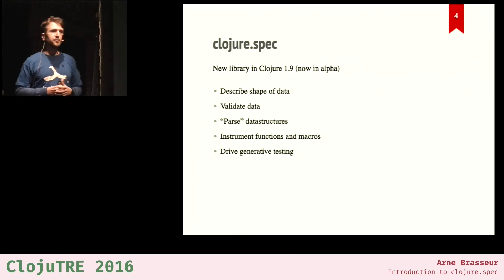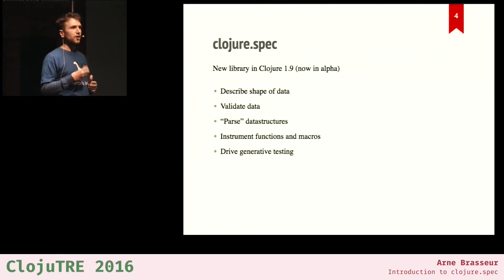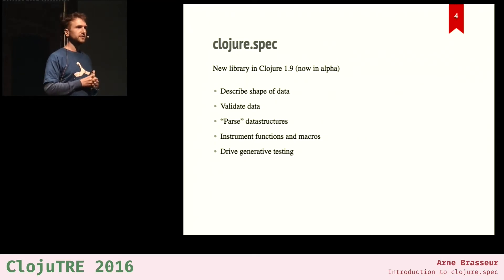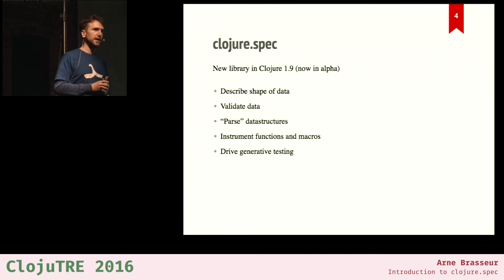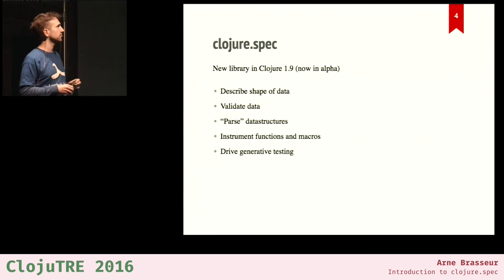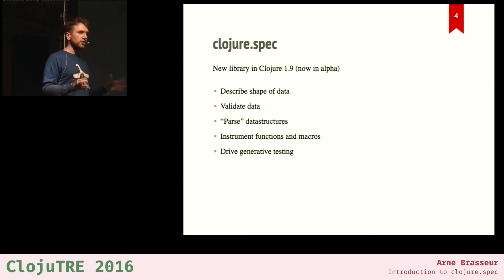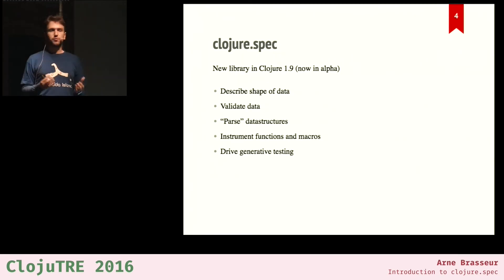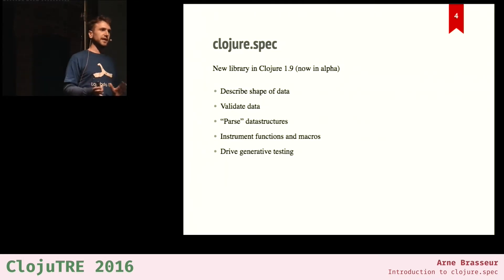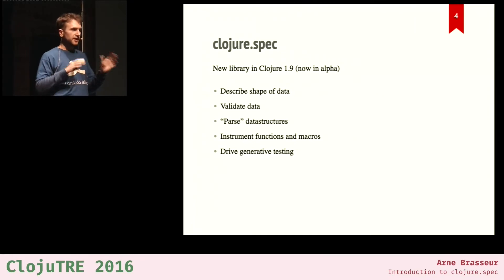Clojure spec is a new library coming out in Clojure 1.9. 1.9 is not out yet — it's in alpha, about a dozen alpha releases — so you can try it out but things might still change before the official stable release. What Clojure spec gives you is a language for describing the shape of your data, and then there are various things you can do with that.